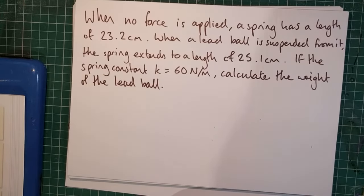When no force is applied, a spring has a length of 23.2 centimeters. When a lead ball is suspended from it, the spring extends to a length of 25.1 centimeters. If the spring constant K equals 60 newtons per meter, calculate the weight of the lead ball. Well, let's have a look through and see which quantities we've been given.